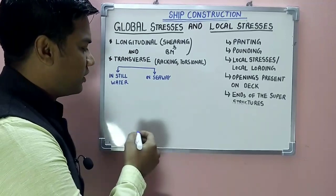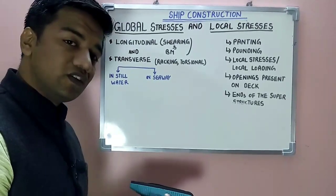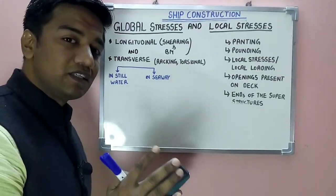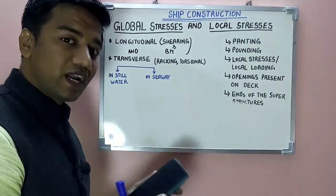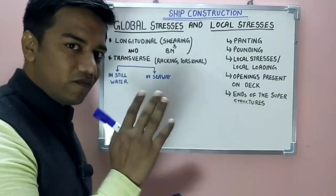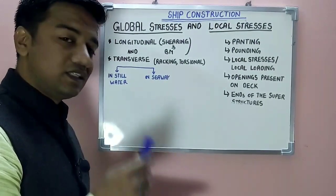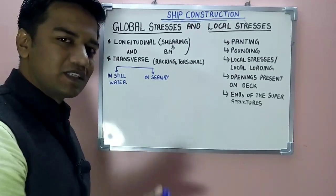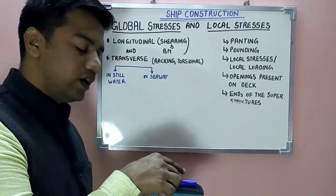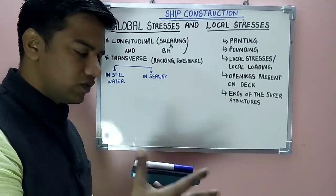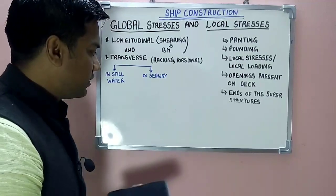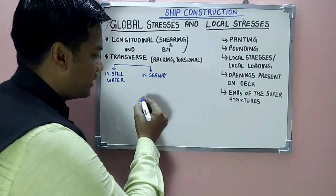Under longitudinal stresses, one is the shearing forces which develop. Shearing forces are the algebraic sum of the forces acting vertically upwards towards one side of that point. The forces involved are the weight of the ship acting downwards along with the weight of the cargo, and the buoyancy force acting upwards. Let's make the diagram.